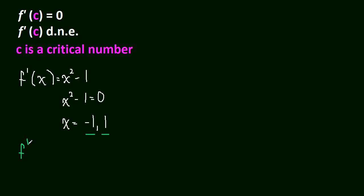Now why? Because if you take the derivative and you plug in negative 1, that will equal 0. Or if you take the derivative and you plug in positive 1, that will also equal 0. So negative 1 and 1 are critical numbers. And that's it, that's all there is to it.